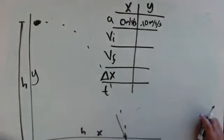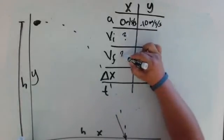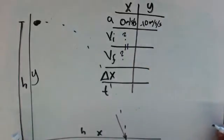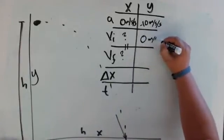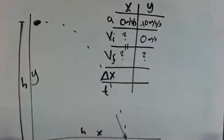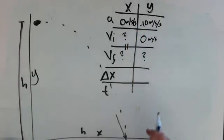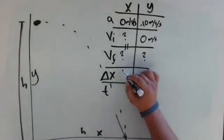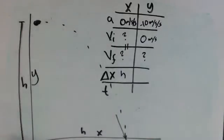The initial velocity in the x direction is unknown, but it's the same as its final velocity — those two terms are equal to each other. In the y direction, it's thrown out of the window horizontally, so its initial velocity is zero, and its final velocity is unknown. The change in position in the x direction goes from here to here, so it's h. In the y direction it starts here and goes here — it's a negative term, negative h.